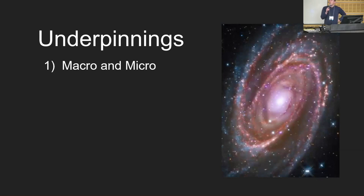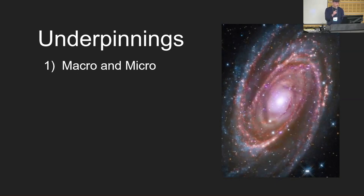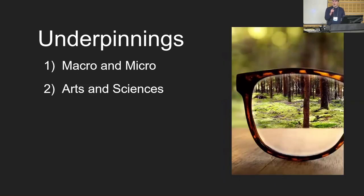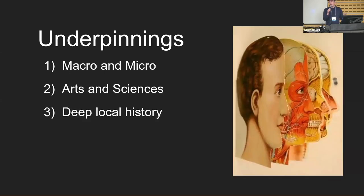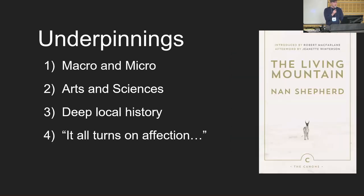This is the sense of place portion of the conference. The argument is that to have a sense of place, you need the micro and the macro — you need to zoom in and zoom out. You also need both arts and sciences; we shouldn't think of them as disjunctive but as complementary, almost like two lenses in a pair of eyeglasses so we can see the world in three dimensions and crisp clarity. We can call this approach a kind of deep local history — peeling back the layers of this place.